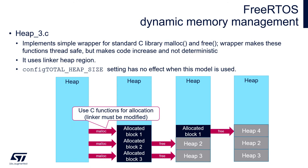The third model, heap3, stored within heap3.c, is a model which needs to be implemented fully by the user. It uses the heap area common with the MCU heap area, and the user must prepare the linker file and their own implementation of functions for memory allocation and memory release. We will not focus on this model within this training session.